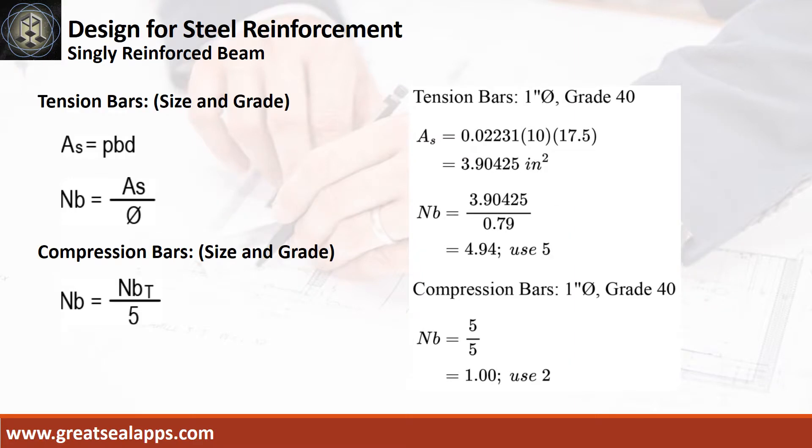Given ρ equals 0.02231, b equals 10 inches, and d equals 17.5 inches, the area of steel for tension bars is 3.90425 square inches. The number of bars for 1 inch diameter is 5. The number of compression bars is 2.